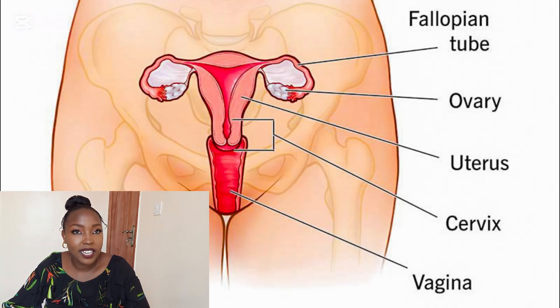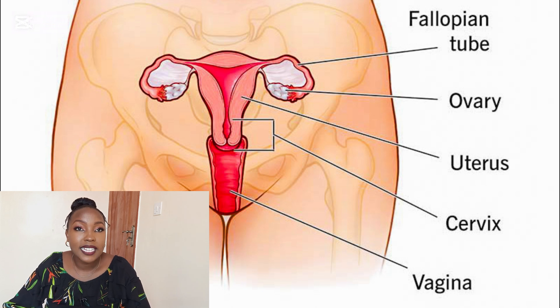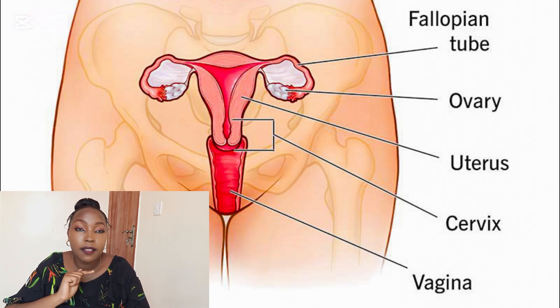Finally, we have the vagina. The vagina is a muscular elastic tube that runs from the cervix to the vaginal opening. The vaginal environment is acidic, with a pH of around 3.8 to 4.5, which inhibits the growth of harmful bacteria.